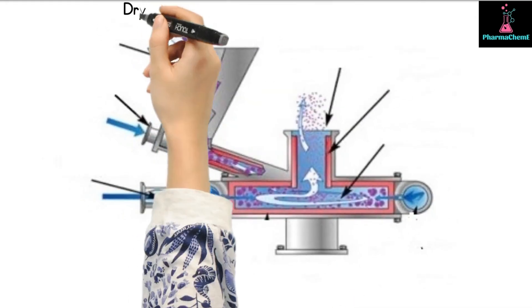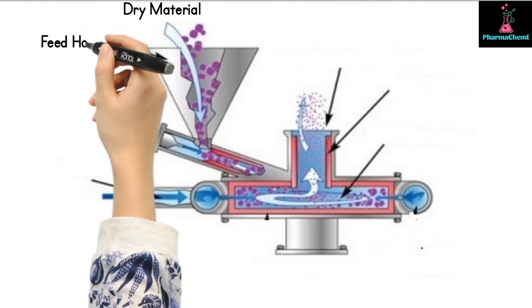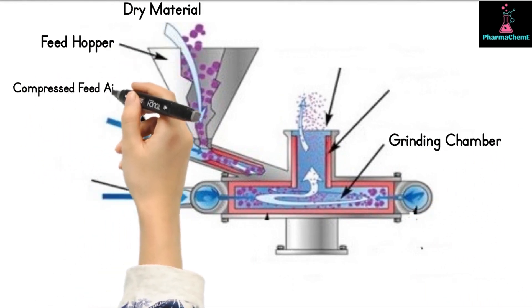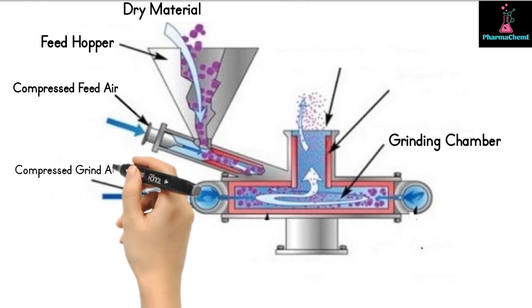Dry material is loaded into the feed hopper, then fed into the grinding chamber. Nozzles inject compressed air, creating a vortex.